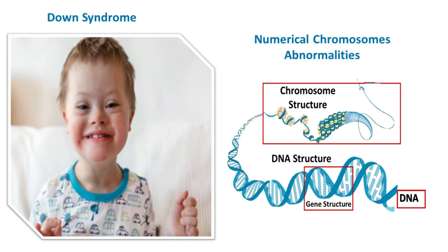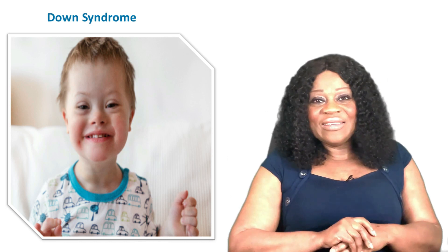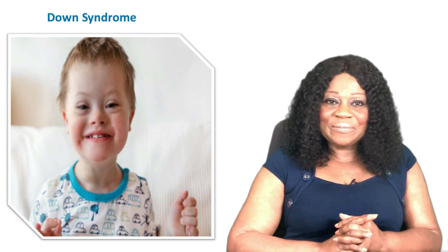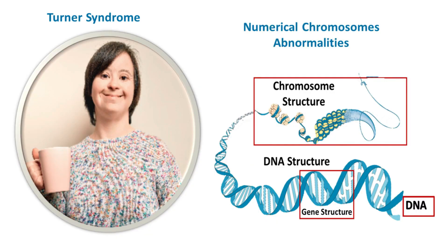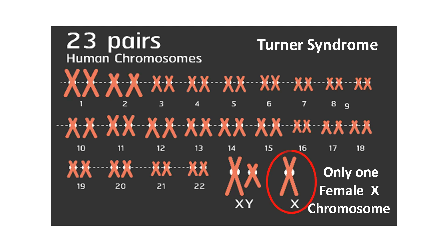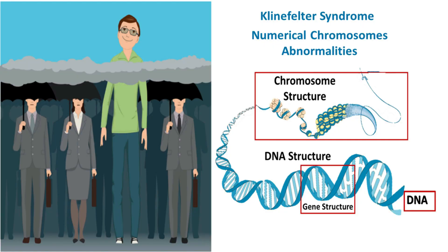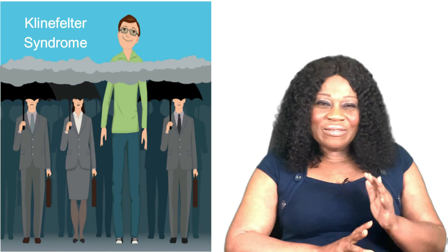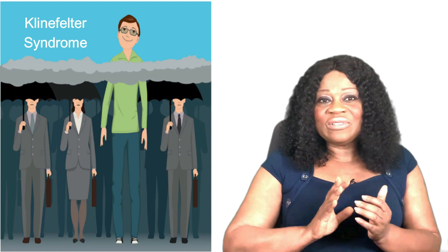Down syndrome is marked by intellectual disability, learning difficulties, and characteristic facial appearance in infancy. Another example of numerical chromosomal abnormality is Turner syndrome, when a female is born with only one sex chromosome — an X instead of XX. Such individuals are usually shorter than average with a characteristically wide neck and are unable to have children. Another numerical abnormality is found in some males born with an additional sex chromosome, resulting in 47 instead of 46 chromosomes. Such men develop Klinefelter syndrome, characterized by tall stature and often impaired fertility.